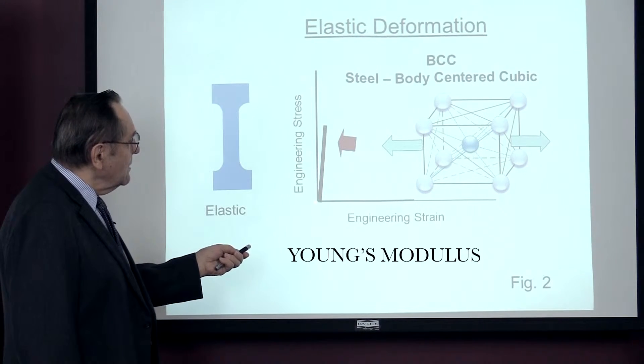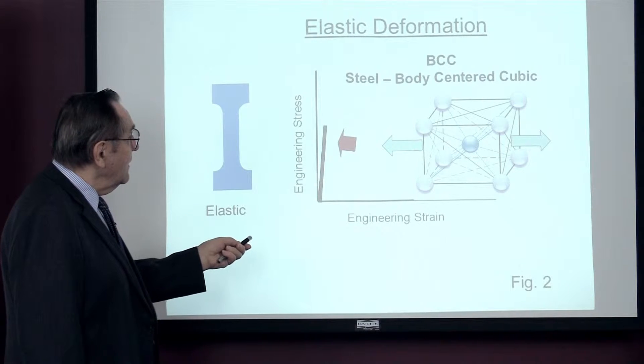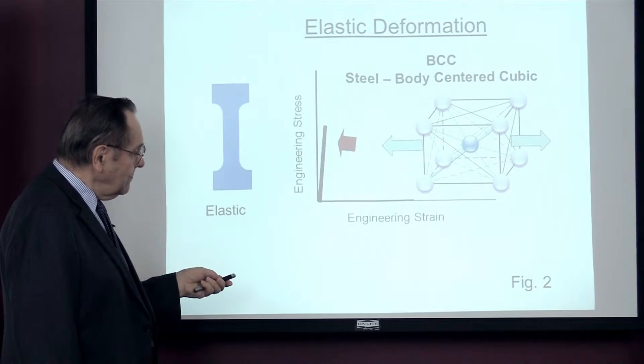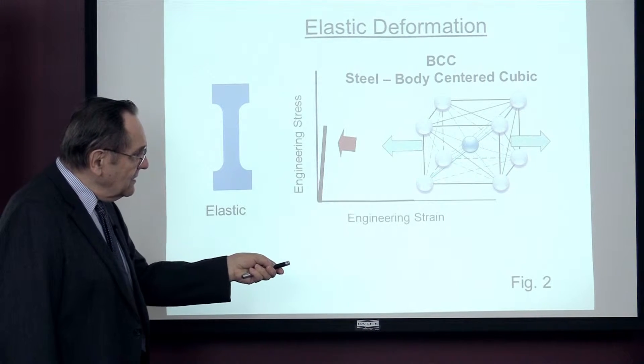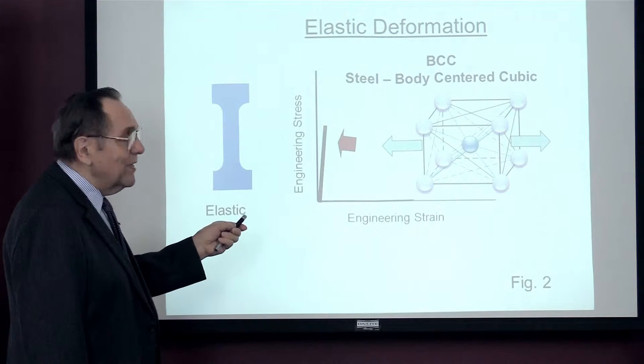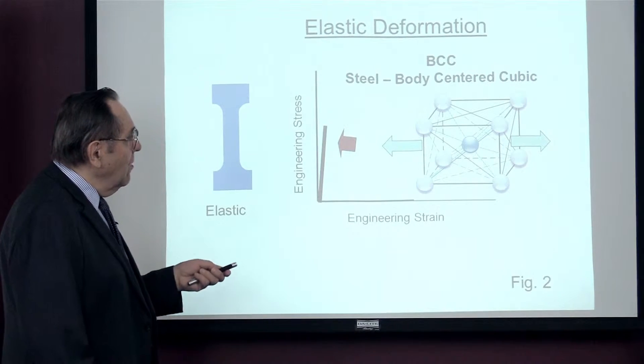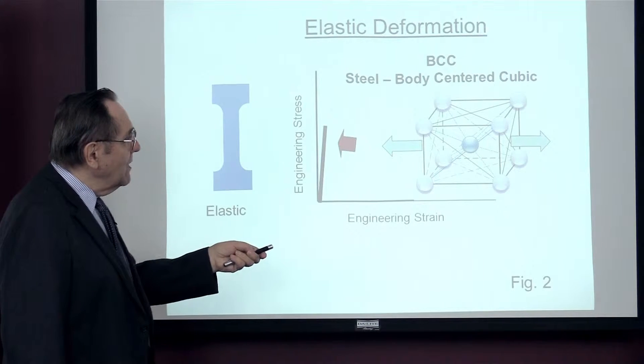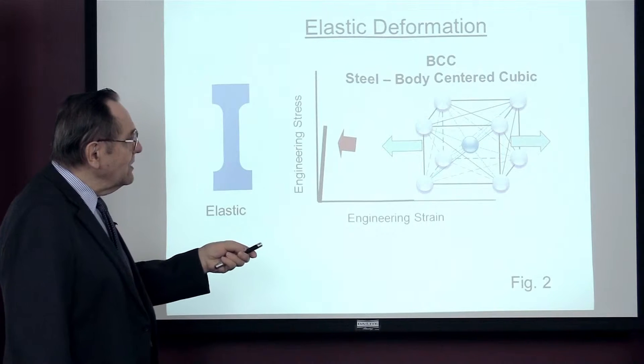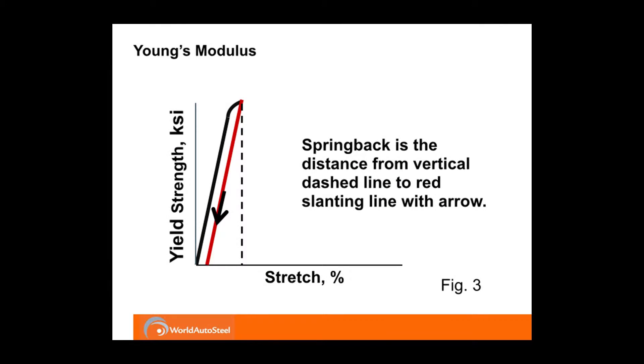Now normally this modulus is so strong, 30 million for steel for example, that it comes right up this axis right here. I've elongated this axis so that we can have some tip in here so we can see what happens to this modulus as we work. As you pull the metal here, you climb up. When you release the forces, it snaps back down.